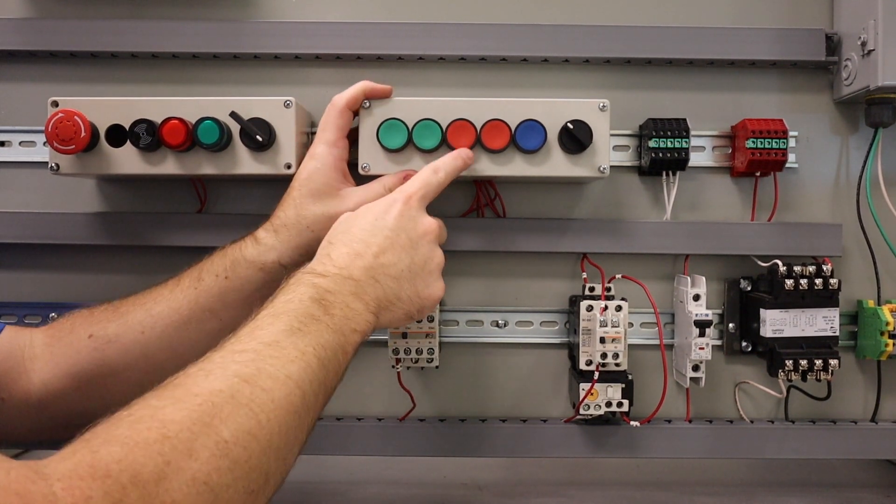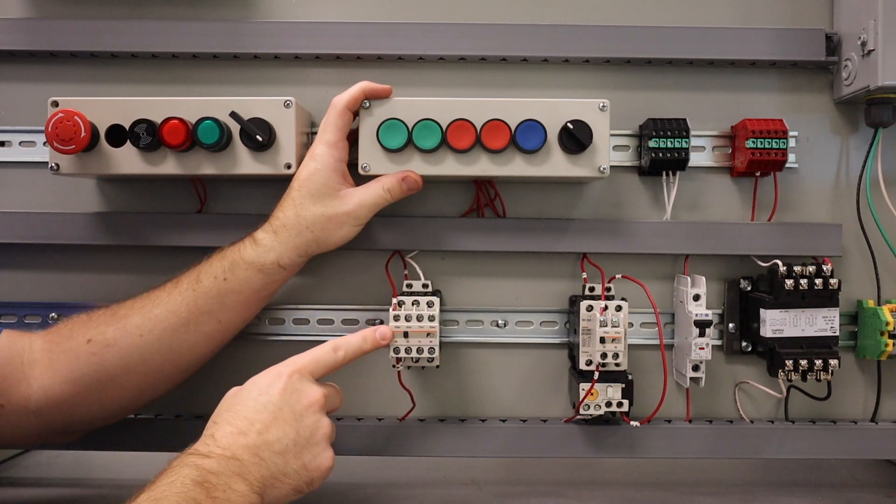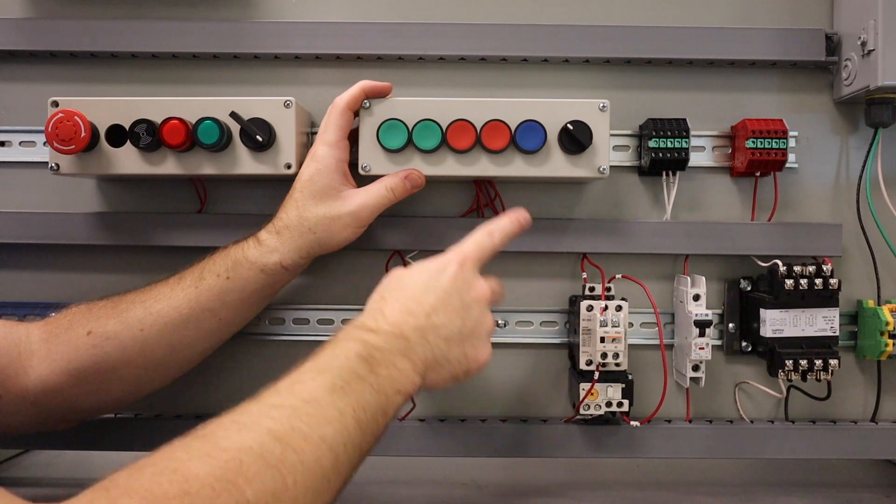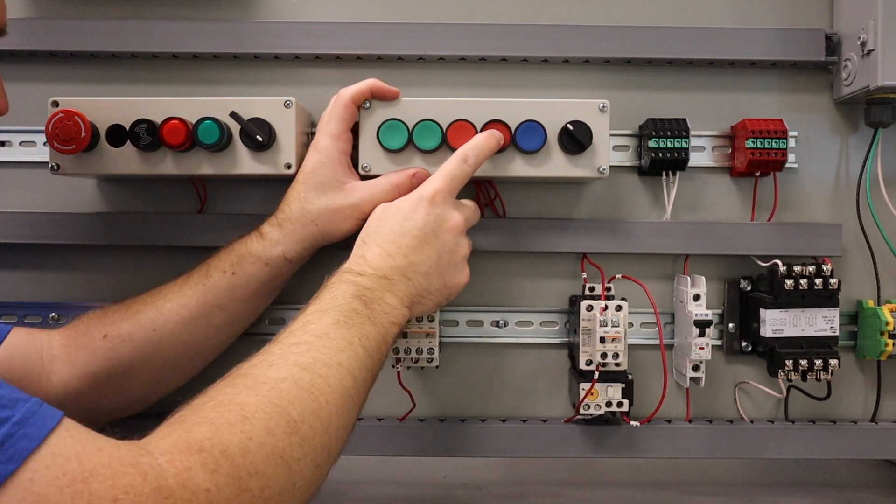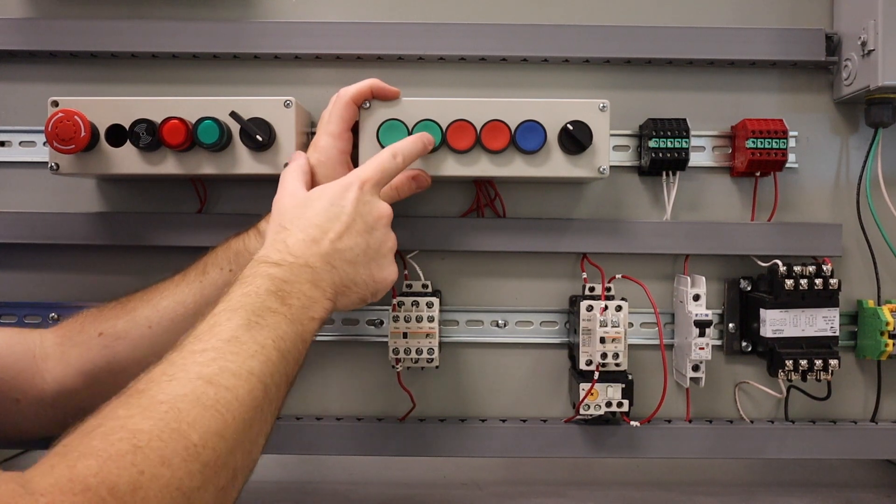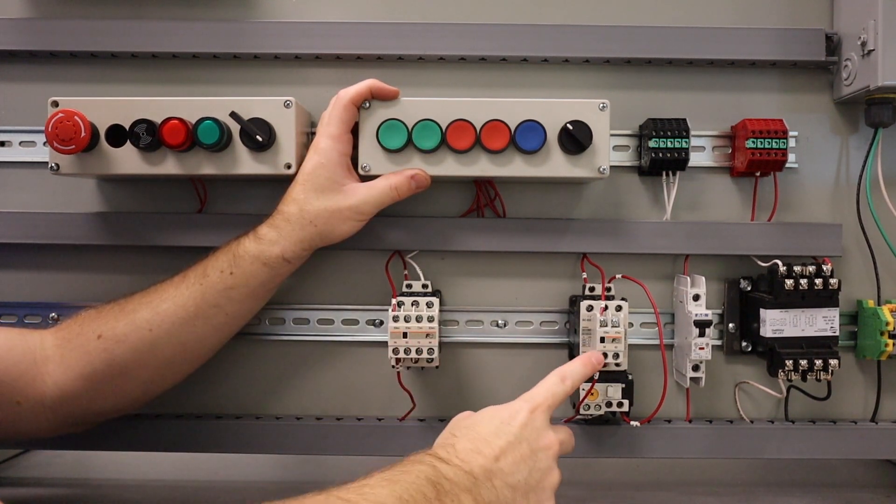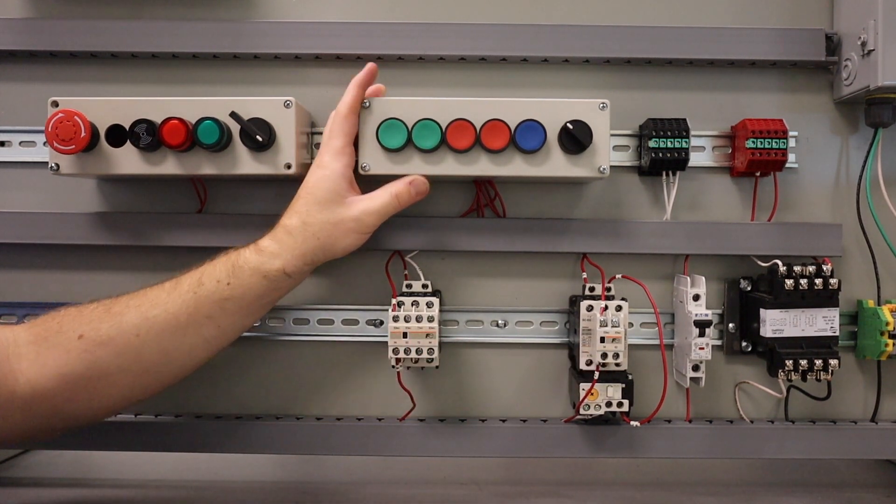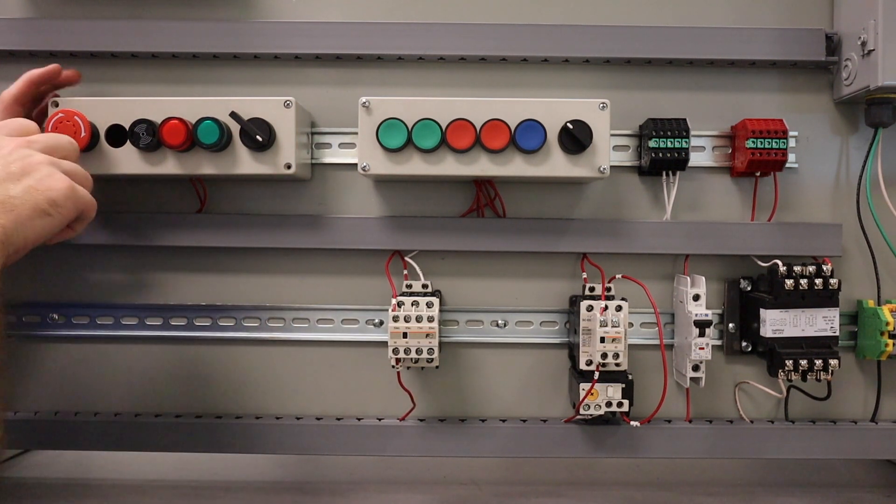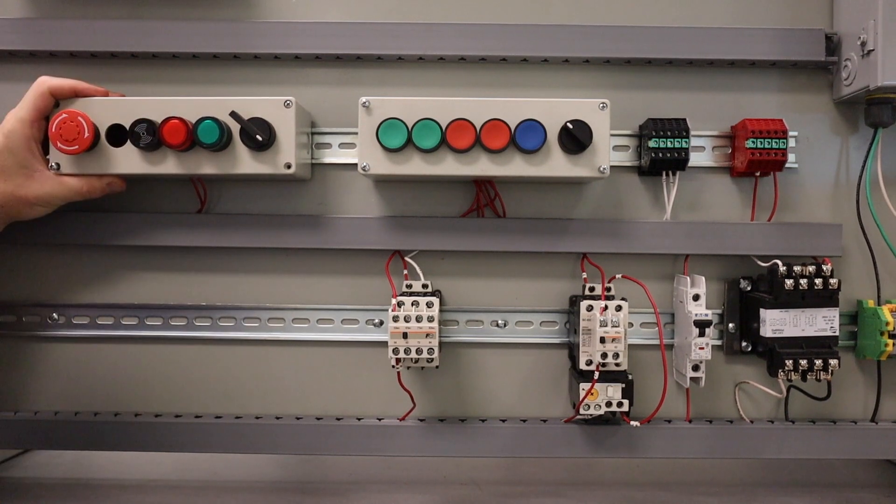If I press motor two, it's going to pull in. If I hit the motor two stop, it's going to stop. Now if I press this one and this one, you can see that they are both turned on right now. That's how the circuit works. If I hit my e-stop, it'll kill them both.